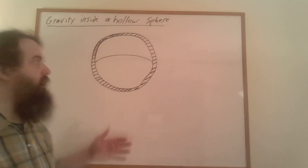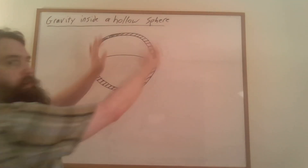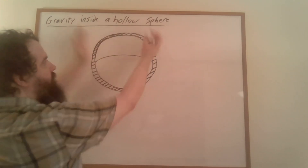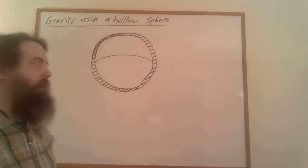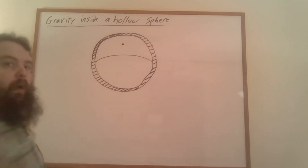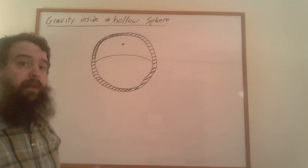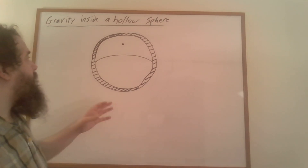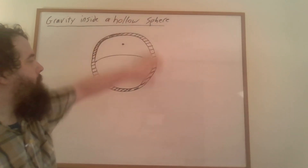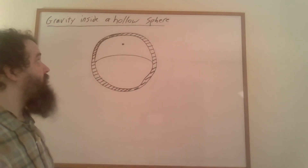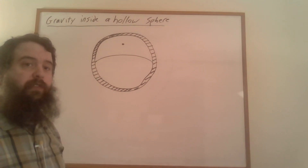So here I've drawn a cross-section of a spherical shell. It's hollow on the inside and has some mass on the outside. I'm interested in what happens if we have some point within this spherical shell - what sort of force of gravity are we going to experience? If we're located here and we have some mass, we're going to be pulled towards all of the matter making up this hollow spherical shell. And the question is, when we add up all of those gravitational forces, what total force are we going to experience?